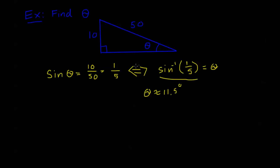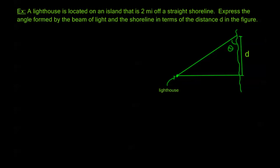That's the basic idea we're going to be using. Now let's look at a couple more detailed problems. A lighthouse is located on an island that is 2 miles off a straight shoreline. Express the angle formed by the beam of light and the shoreline in terms of the distance d in the figure. The distance d is a distance along the shoreline, and the lighthouse is 2 miles away from the shoreline, so we fill in that information — that's given in the problem.